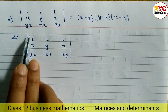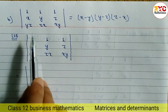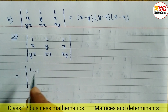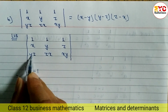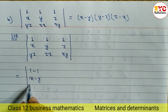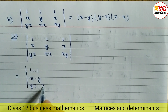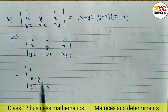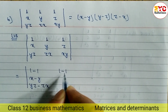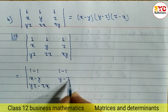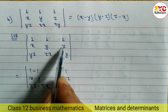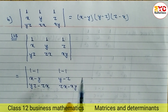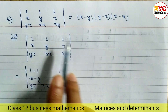So let's subtract the first column and second column. We get 1 minus 1, so we write x minus y here. This two also we have to subtract, giving yz minus zx. Similarly, second column and third column we have to subtract: 1 minus 1, giving y minus z. Then this and this subtract, giving zx minus xy. The third column we write the same.